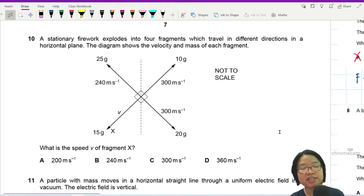Question 10. A stationary firework explodes into four fragments which travel in different directions in a horizontal plane. You can imagine this is a firework you put on the floor, light up, and then run away. The firework flies on the surface of the road. They don't fly up. There is no vertical motion. This is all horizontal.